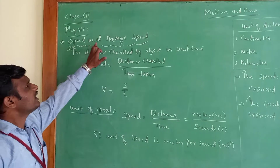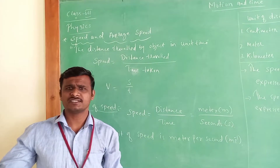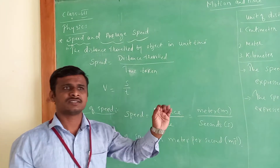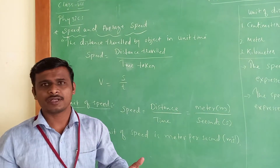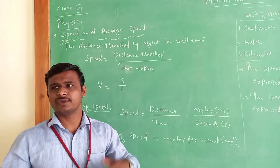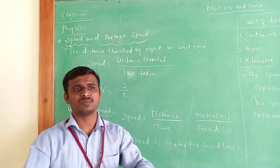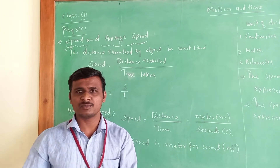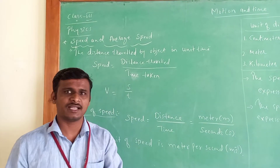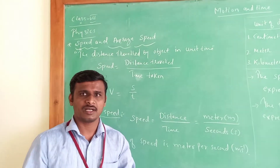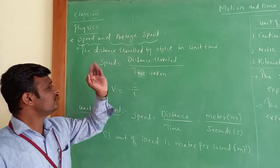So first thing: speed and average speed. What do we mean by speed and average speed? You see vehicles around us — some vehicles move fast and some move slow. If a vehicle moves very fast nearby you, you say it is moving at high speed. If it is moving slow in front of you or behind you, you say that vehicle is moving slow.